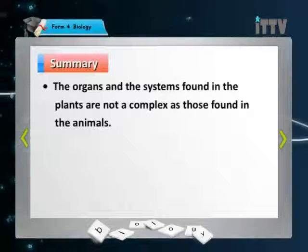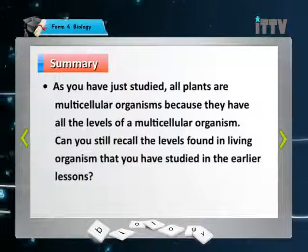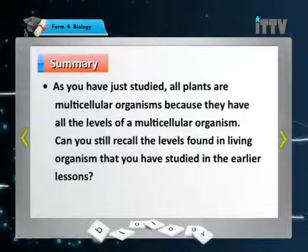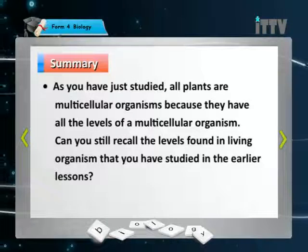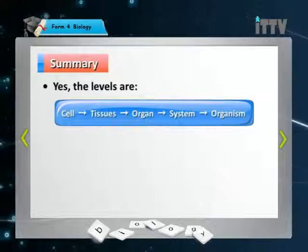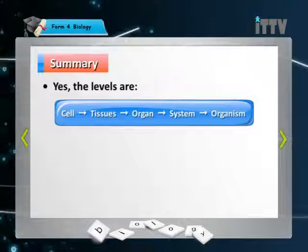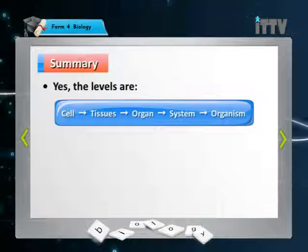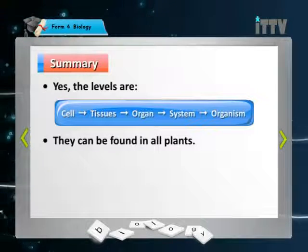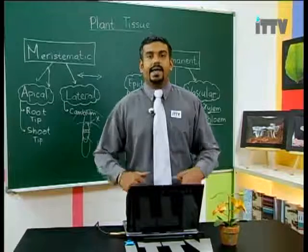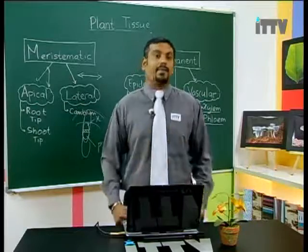Organs and systems found in plants are not as complex as those found in animals. All plants are multicellular organisms with all the levels of a multicellular organism: cells become tissues, a group of tissues forms an organ, a group of organs forms a system, and systems together form the organism. These levels can be found in all plants.